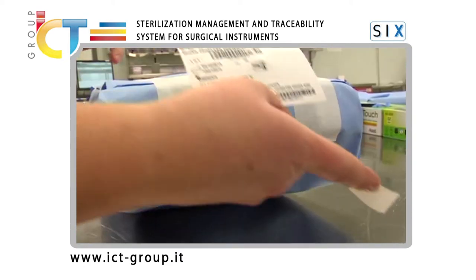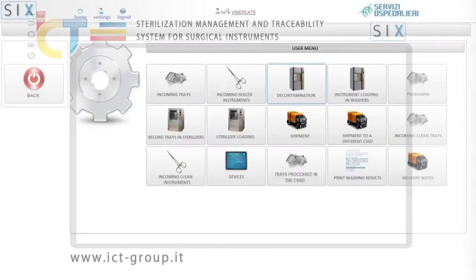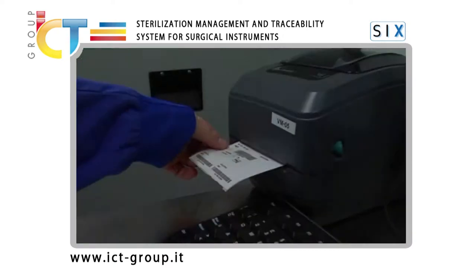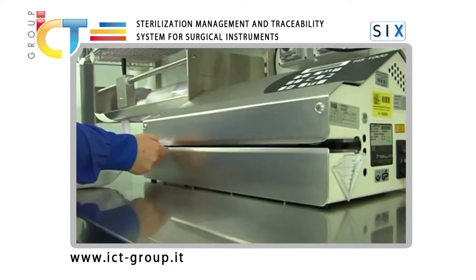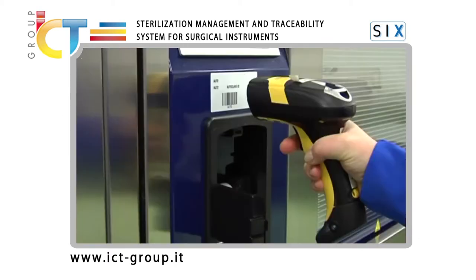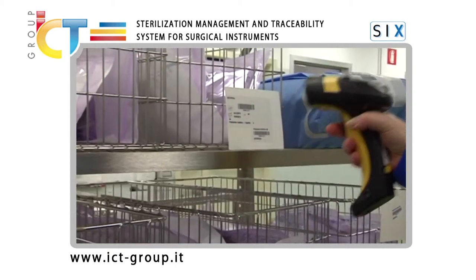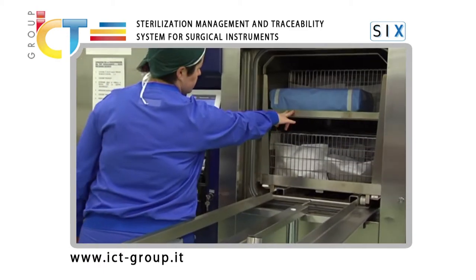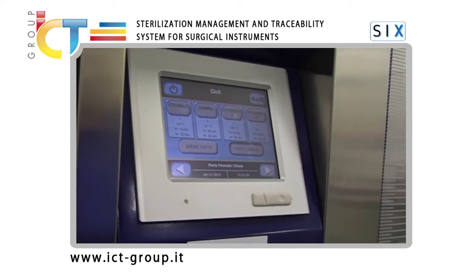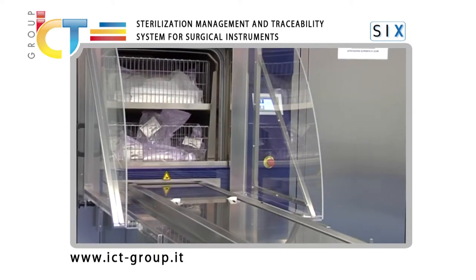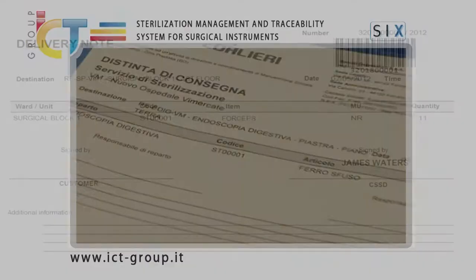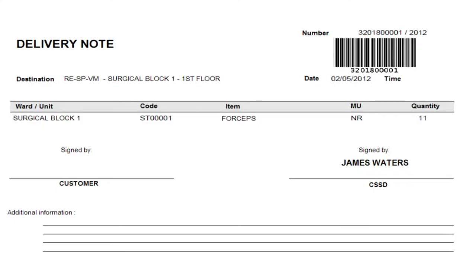Six is designed with state-of-the-art technology and software architecture. It is a web-based application using Java technology and is cloud ready. It is simple to use with any personal computer and standard internet browser, both inside the sterilization facility and outside. Six is also a modular system, enabling facilities to start with a basic version which can be extended as requirements dictate.